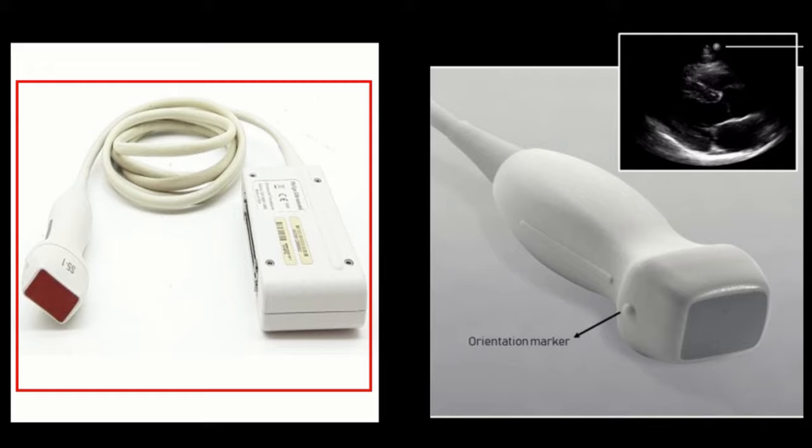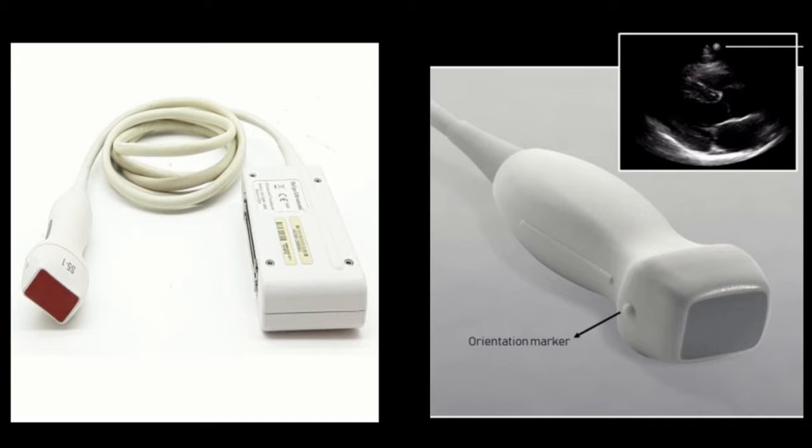This is an adult echo transducer probe and you can identify it by seeing S5 written near the tip of the probe.